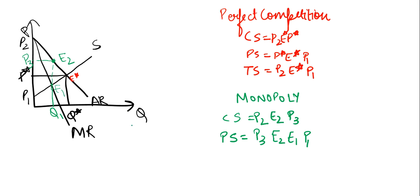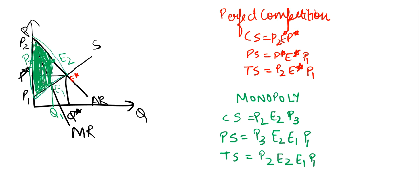Now, our total surplus was previously the region P2 E star P1. Our new total surplus is now the figure P2 E2 E1 P1 — this entire region is our new total surplus. Therefore, our loss in total surplus — which we also call dead weight loss — is the region E2 E1 P1. That is this yellow shaded region is our dead weight loss.